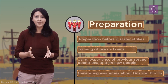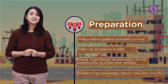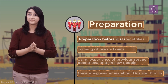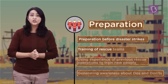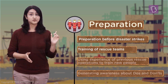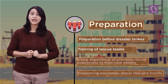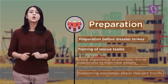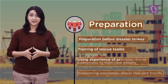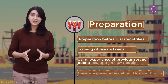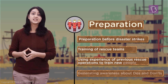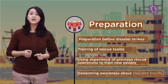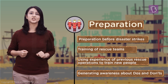Disaster management includes a series of steps. The first step is being prepared before disaster strikes. Rescue teams must be trained in advance and always be available and prepared to help people whenever disaster strikes — this is pre-planning. We use the experience of teams that have conducted rescue operations before and incorporate their insights while training new people. Apart from that, people in general should be aware of the do's and don'ts in such situations.